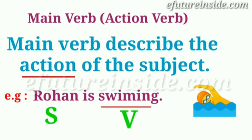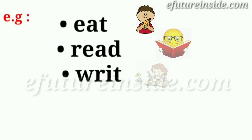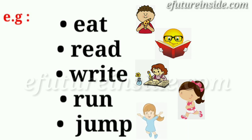In short, we can say that a verb is an action which we do — the activity we perform. For example: eat, read, write, run, jump — these are all action verbs. These words tell us what action or activity is being carried out by the subject.